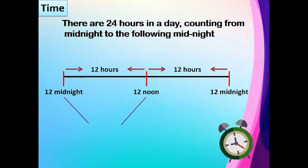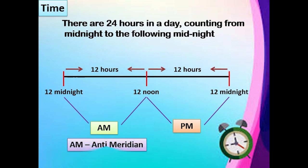So from midnight 12 to noon 12 it is a.m. And 12 noon to midnight 12 is p.m. A.m. is anti-meridian. P.m. is post-meridian.